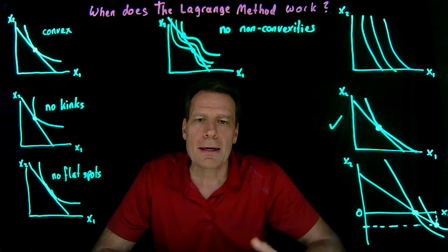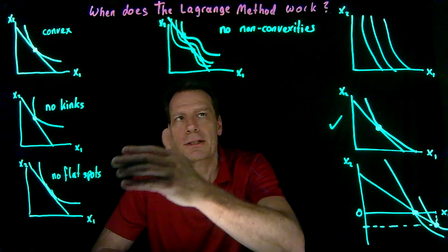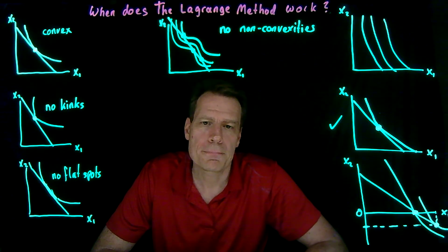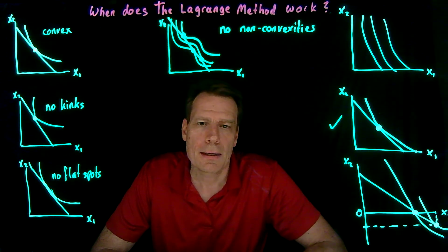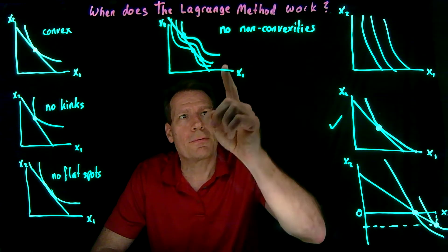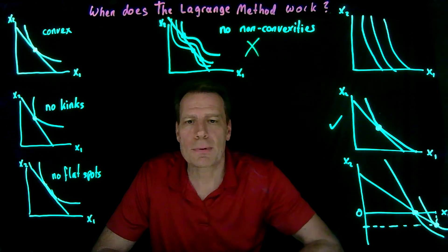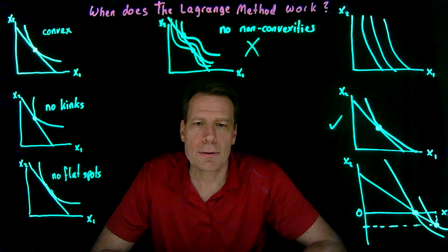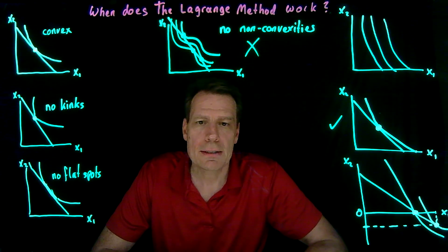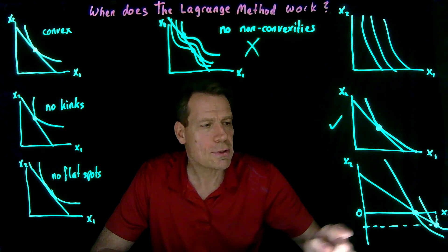So the bottom line is this: if we assume that all goods are essential — so no indifference curves cross the axis — that there are no kinks, no flat spots, no non-convexities, so everything's convex, then the Lagrange method will pick out the one unique optimal consumption bundle. If, on the other hand, we have non-convexities, it'll pick out a bunch of bundles and only one of those is going to be optimal, so we'd have to do some extra work — in this course we're simply going to assume that never happens. And finally, we have the case where indifference curves cross the axis and some goods are not essential, in which case the Lagrange method either gives us an answer that makes sense — in which case that's the right answer — or it gives us an answer that doesn't make sense, in which case we're at a corner solution.